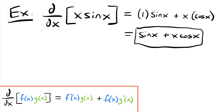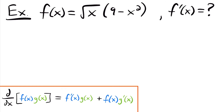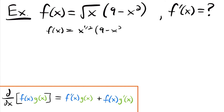It's not too difficult when you have pretty simple functions like x and sin x. Now let's look at a more complicated example. We have f of x equal to the square root of x times the quantity 9 minus x squared. We have a product of two functions, so we'll use the product rule. Let's redefine f of x by rewriting the square root of x as x to the one-half power, so we can more easily apply the power rule. So f of x equals x to the one-half power times 9 minus x squared.